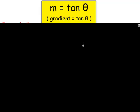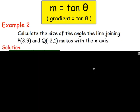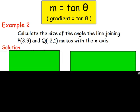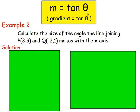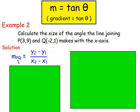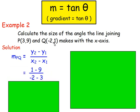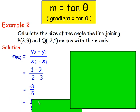Example two: calculate the size of the angle the line joining points P and Q makes with the x-axis. We're not given the gradient or the angle, but we are given two points P and Q. So we use the gradient formula: gradient of PQ equals y2 minus y1 over x2 minus x1. Substituting in the values gives 1 minus 9 over negative 2 minus 3, which is negative 8 over negative 5. The two negatives make it positive, giving us 8 over 5 as the gradient.